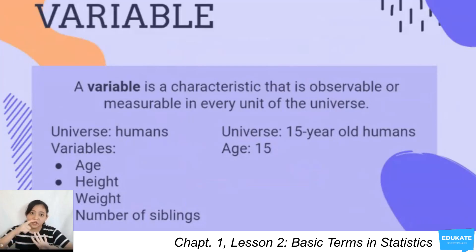Now, these variables are observable in every unit of the universe, which is humans. How about if we're given the universe, 15-year-old humans? Our age now becomes a constant. So our variable for age 15, which is described under the universe, 15-year-old humans, is now what we call a constant.